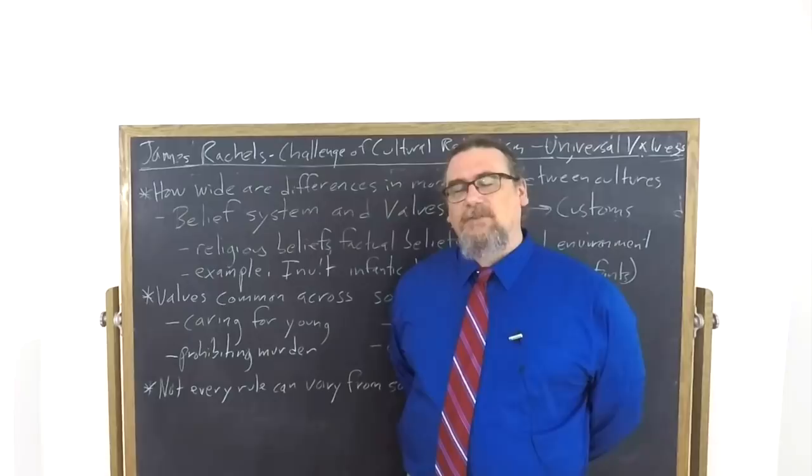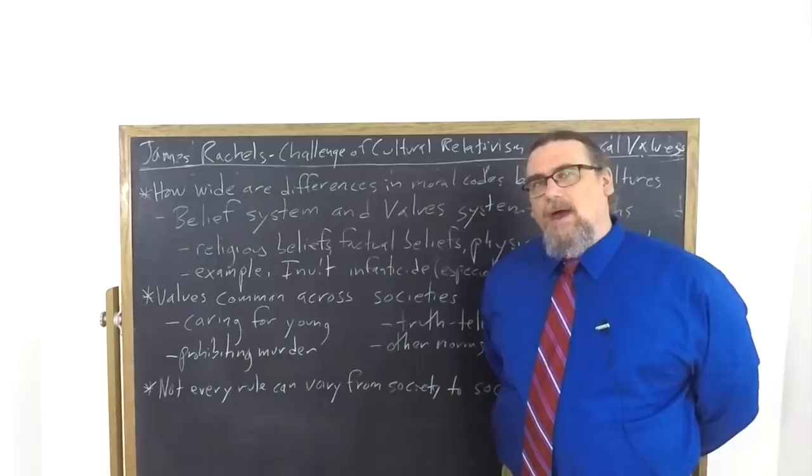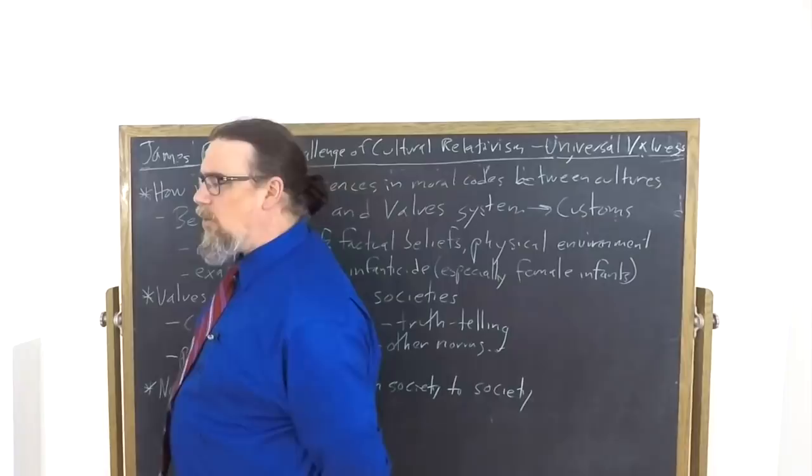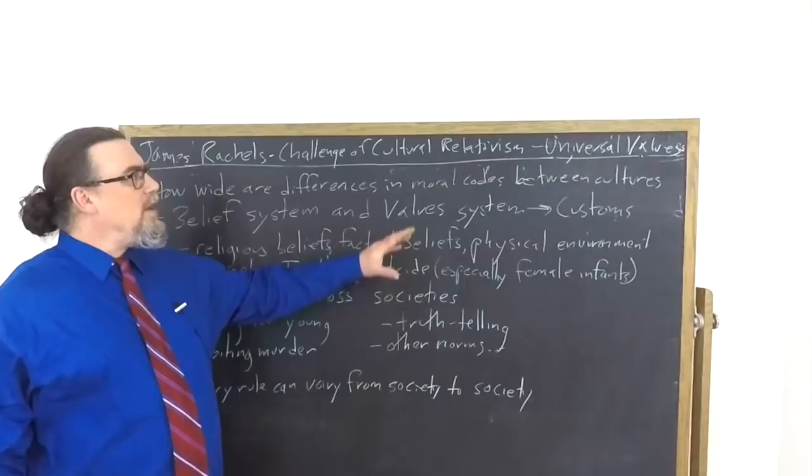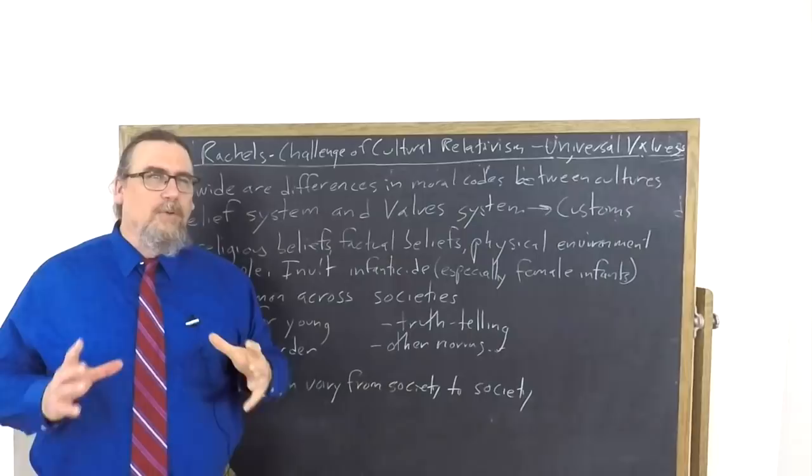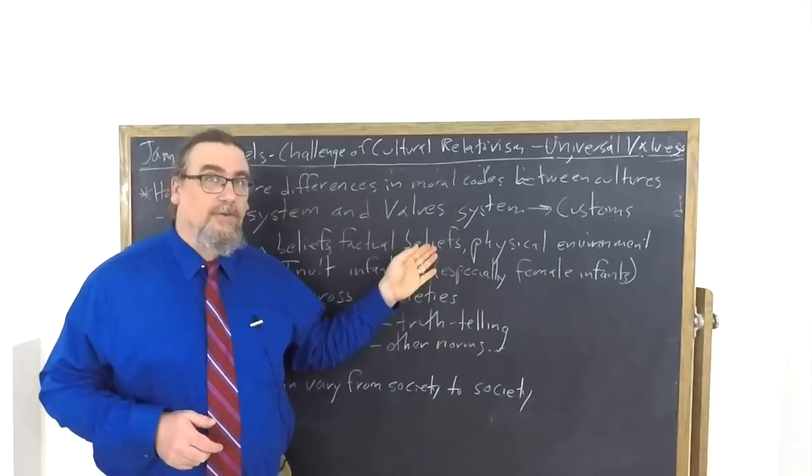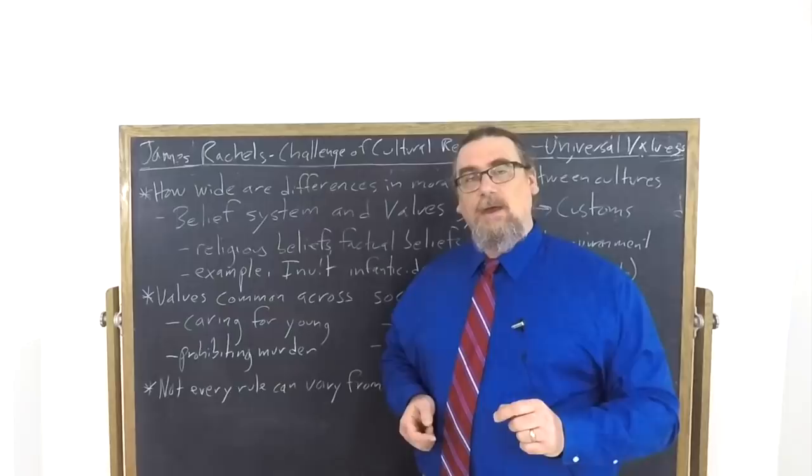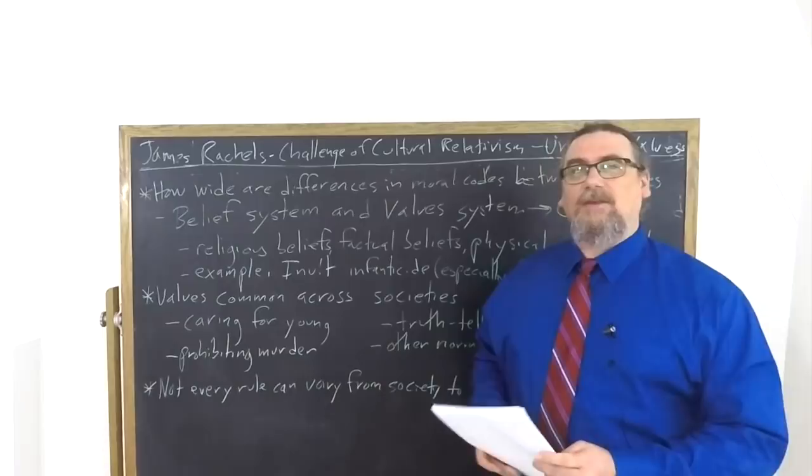Rachels suggests that what we need to do is pay close attention, not just to what it is that people say is right and wrong, but why they think it is right and wrong. What arguments, what explanations do they provide? We need to look at the customs and realize that they are a complex product of both belief systems and value systems. And it could be that the belief systems from one culture to the other are quite different, but the value system might in fact be, if not exactly the same, at least within the same ballpark, that is having a similar structure to them.